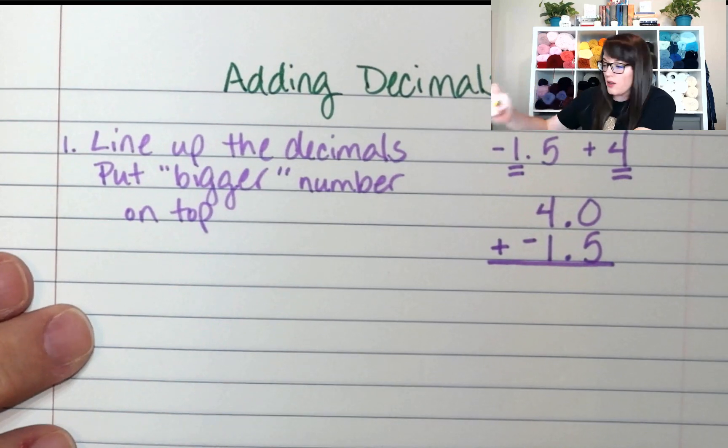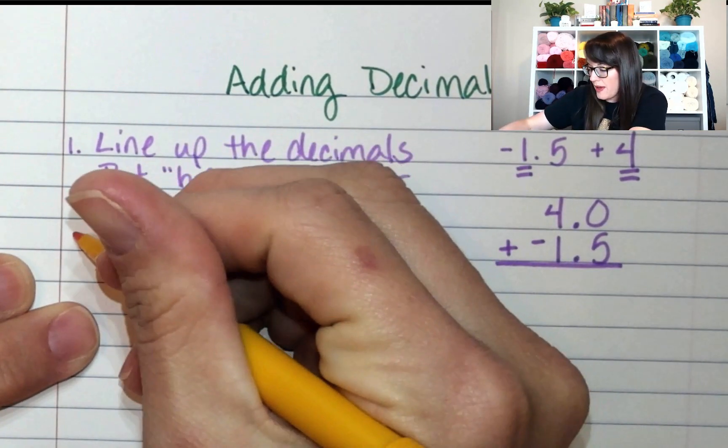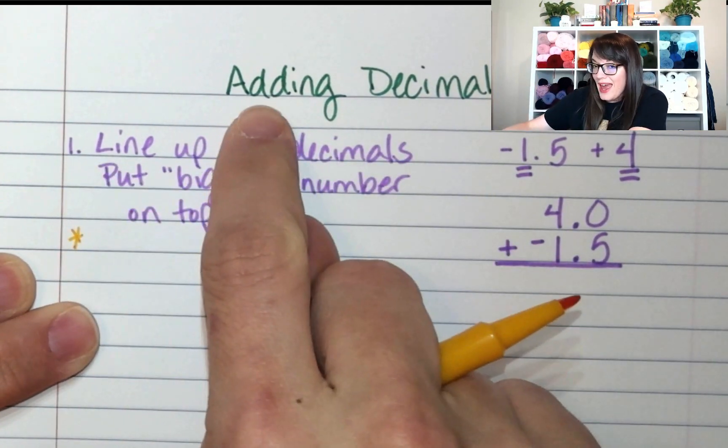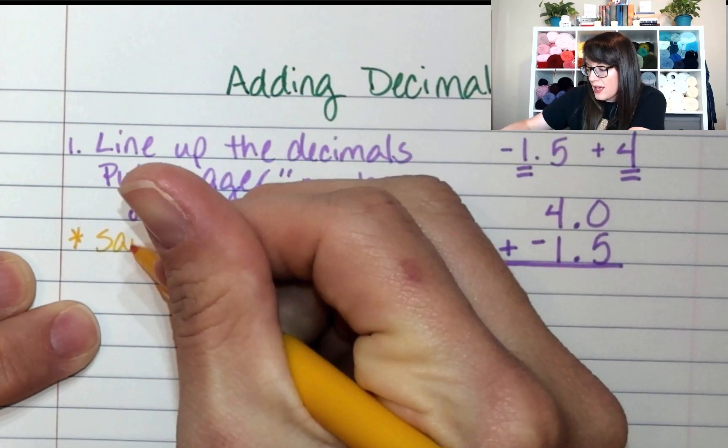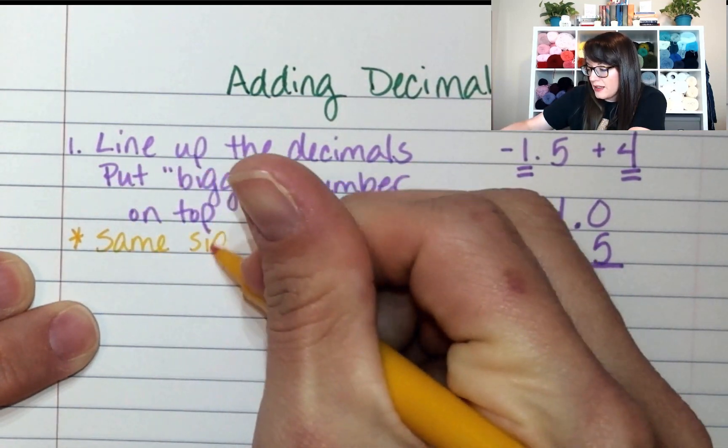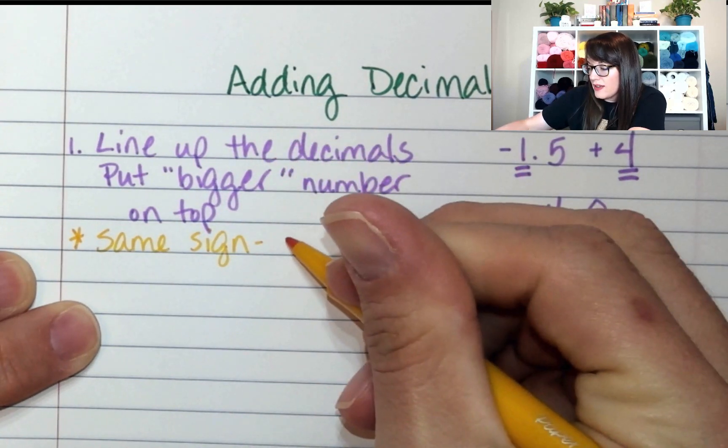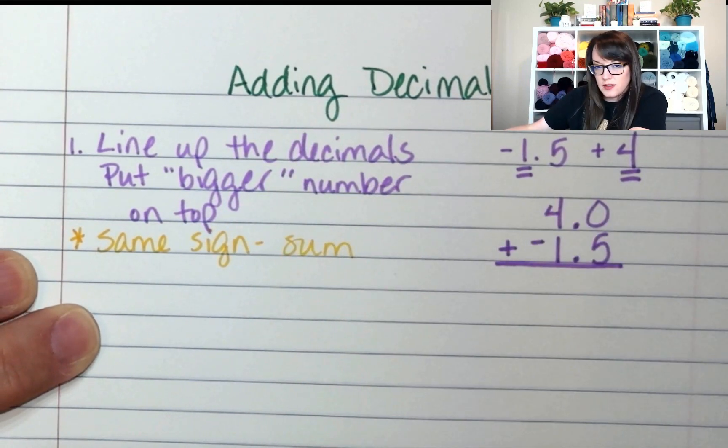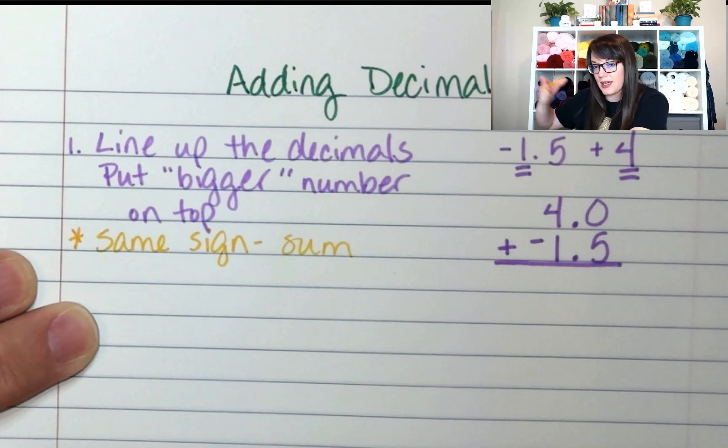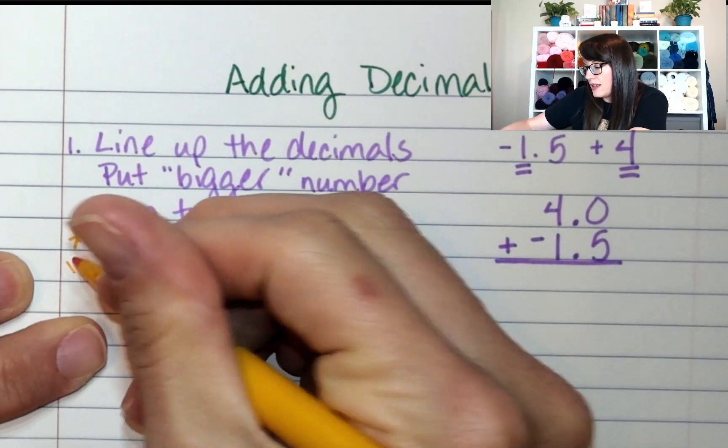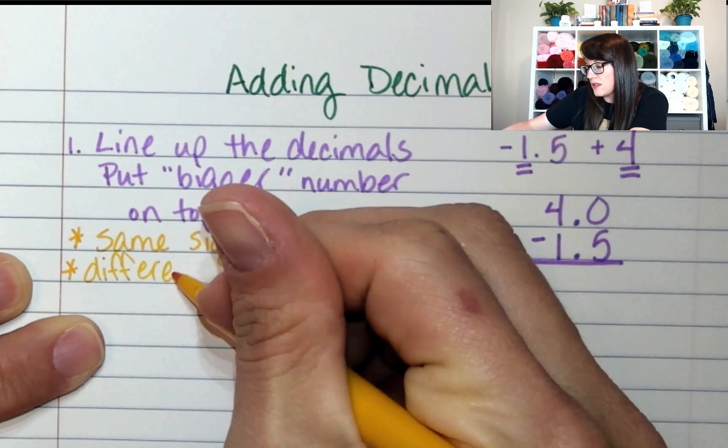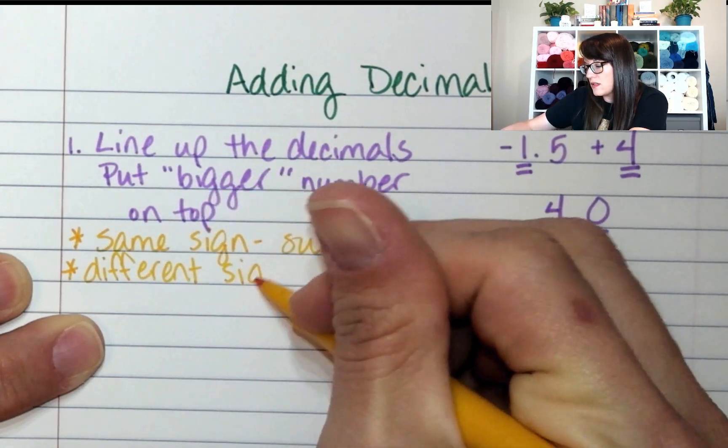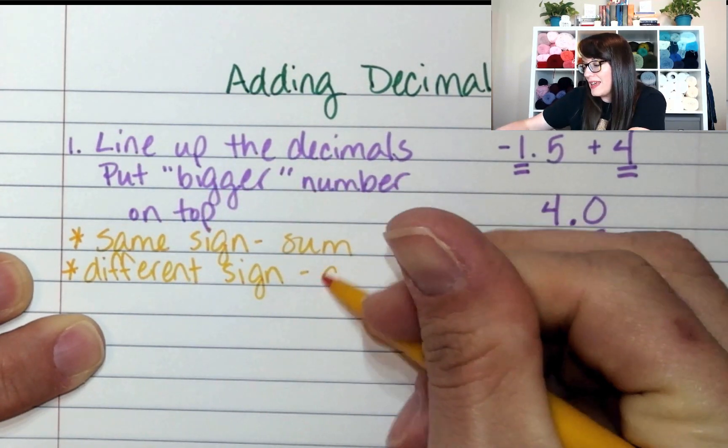And there's a little trick we can use to help us remember that. When we add decimals, if they have the same sign, we find the sum. Same, sign, sum. And if they're different signs, we find the difference.